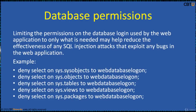The most important mitigation technique is limiting the permissions on the database login used by web applications to only what is needed. This may help reduce the effectiveness of any SQL injection attacks that exploit bugs in the web application. For example, on a Microsoft SQL Server, a database logon could be restricted from selecting some system tables, which would limit exploits that try to insert JavaScript into text columns in the database — for instance: DENY SELECT ON sys objects.